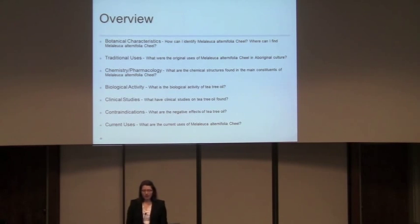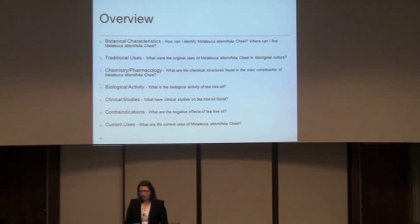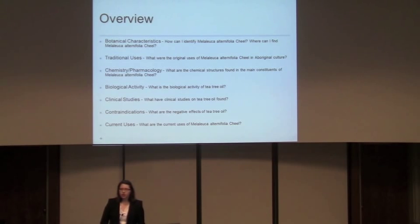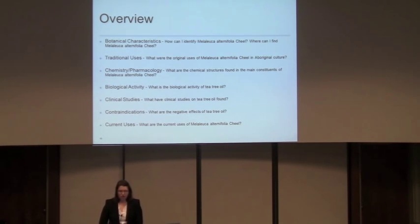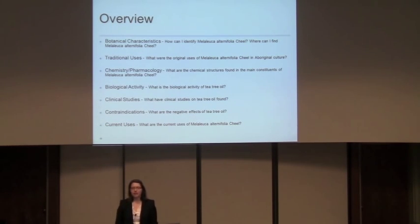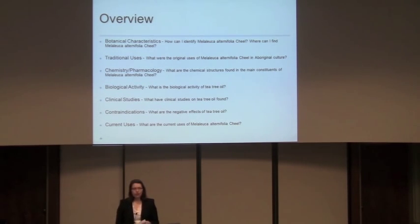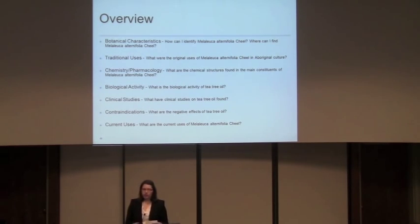An overview of what we're going to talk about today is botanical characteristics — how you're going to be able to identify it — traditional uses, how did the aboriginal people use it originally, go through the chemistry and pharmacology to show you some of the structures, go through the biological activity, which is really the gut of this presentation, showing what tea tree oil can be used for and how it interacts. Then we'll look at a couple of clinical studies, and look at contraindications.